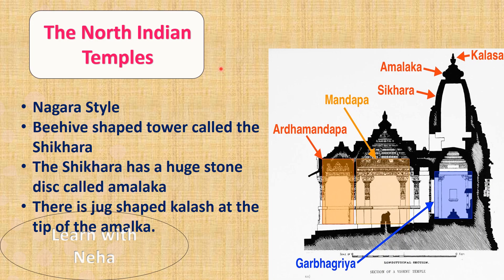Most examples of architecture between the 7th and 12th centuries are temples in both north and south India. North Indian temples during this period were built in the Nagara style. The main feature of the Nagara style is a beehive-shaped tower called the shikhara. At the top of the shikhara is a huge stone disc called the amalka, and above that is a jug-shaped kalash at the tip. Other parts include the garbhagriha and the mandapa. Famous examples include the Sun Temple at Konark, the Kandariya Mahadeva Temple at Khajuraho, and the Jagannath Temple at Puri.